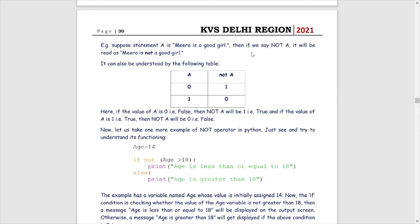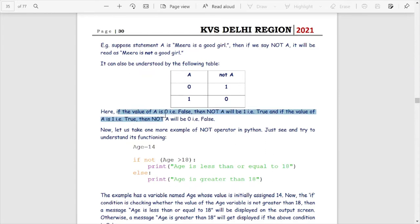For example, if statement A is 'Meera is a good girl', then 'not A' becomes 'Meera is not a good girl'. We can make a truth table: if A is 0 (false), then not A is 1 (true). If A is 1 (true), then not A is 0 (false). So if the value of A is false, then not A will be true.